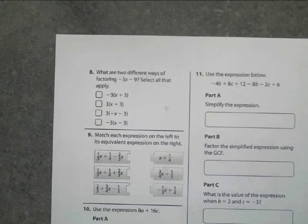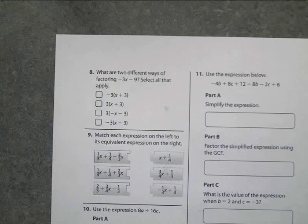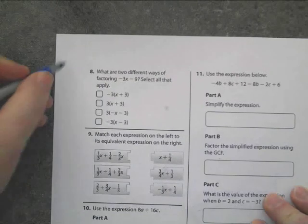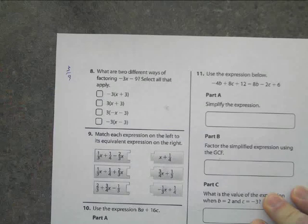Okay, question number 8. What are two different ways of factoring negative 3x minus 9? Now, when I talked about factoring, I told every single person to take the two numbers that are in here. Make a fraction of 3 9ths.